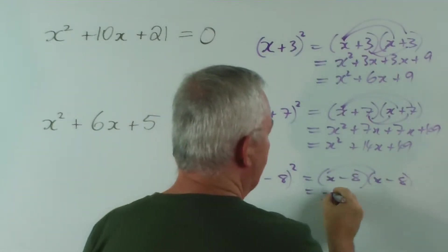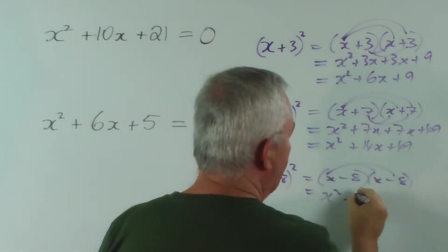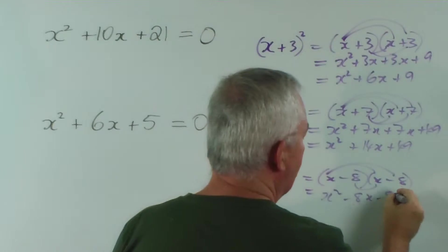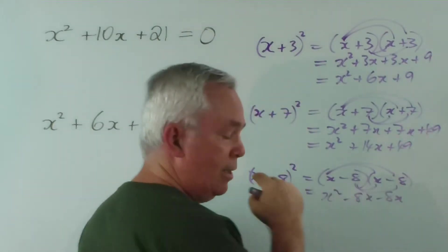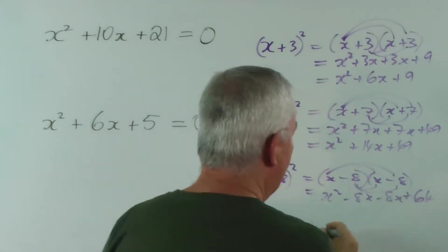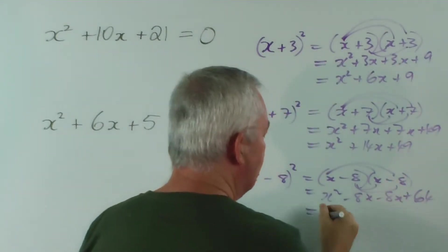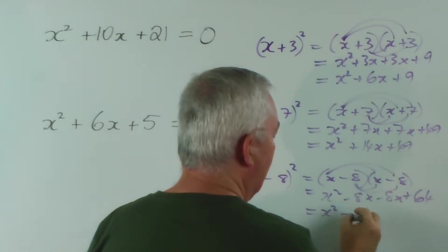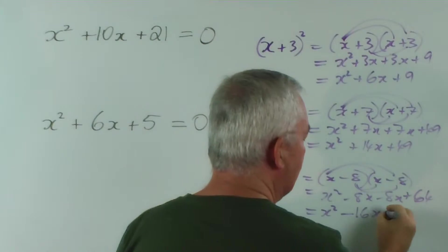Last one. x², minus 8x, minus 8x, minus 8 times minus 8 is plus 64. And again, we have two terms in the middle, and they're identical - they're both minus 8, so it's minus 16x plus 64.